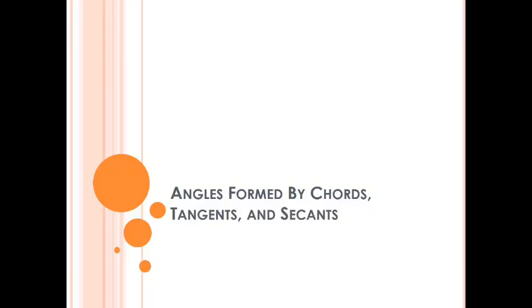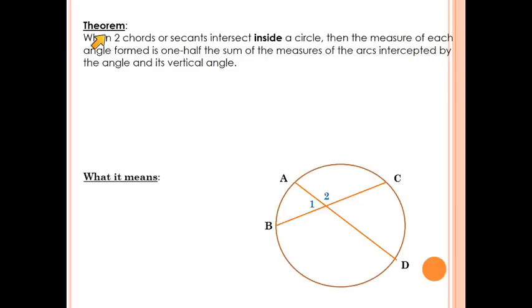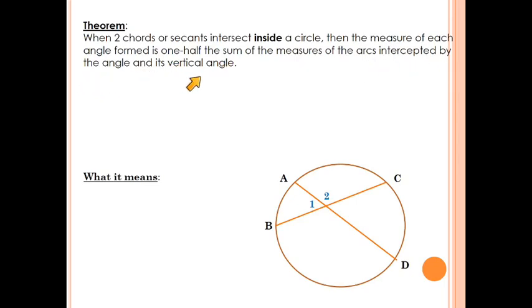In this video we're going to look at angles formed by chords, tangents, and secants. We're going to start with this theorem: when two chords or secants intersect inside a circle, the measure of each angle formed is one-half the sum of the measures of the arcs intercepted by the angle and its vertical angle. That's a wordy definition, so let's talk about what that actually means.